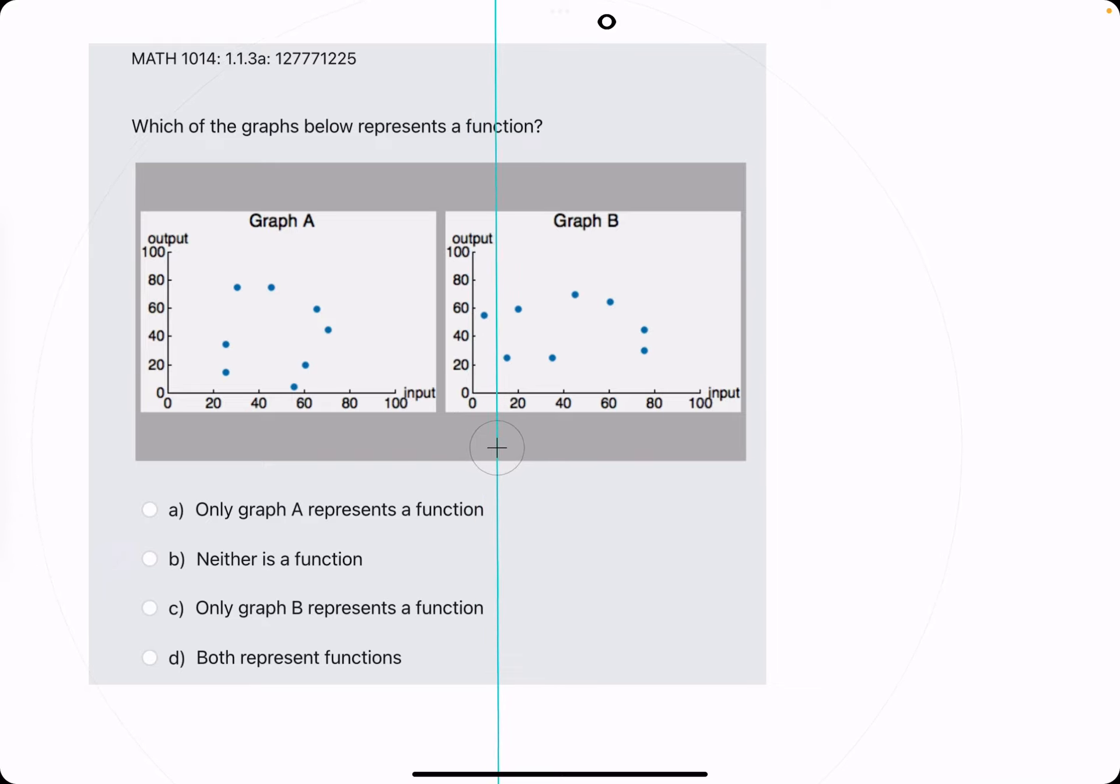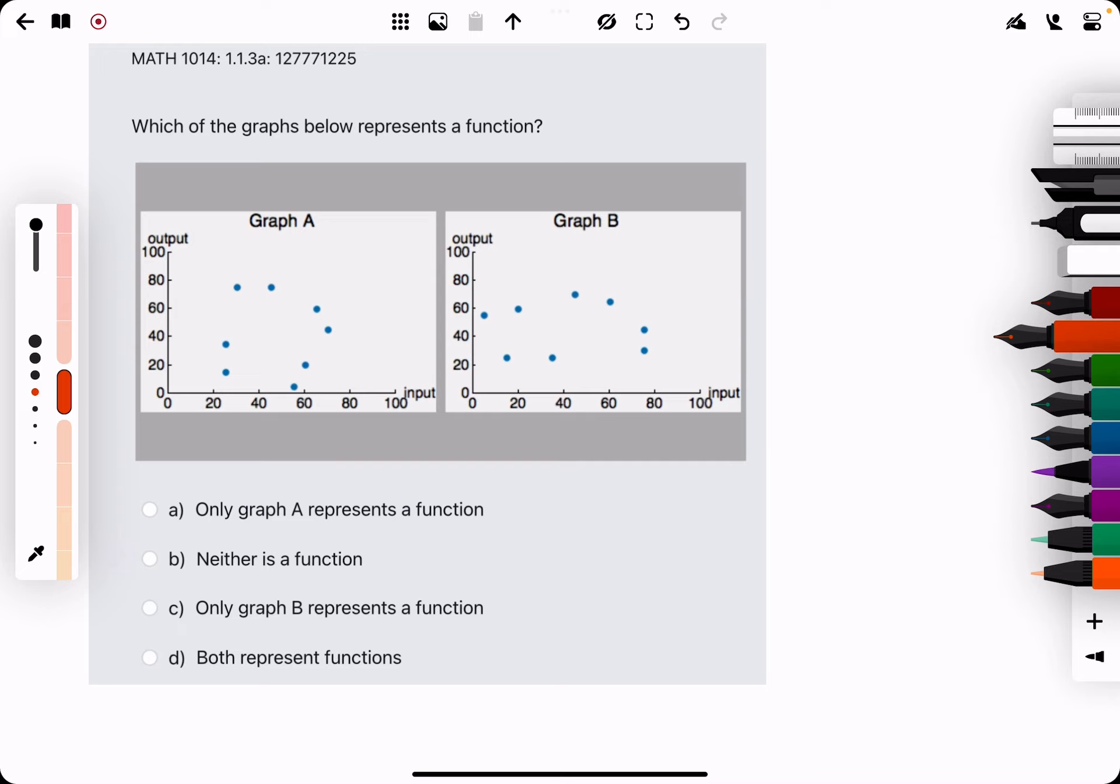And then let's scan through B. Good, good, good. Ah, right at the end there. We have two points on the same vertical line, or two outputs for a single input, which means that graph B is also not a function.